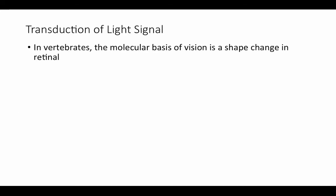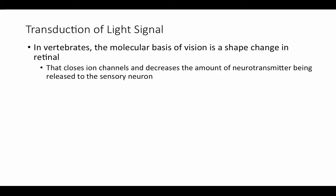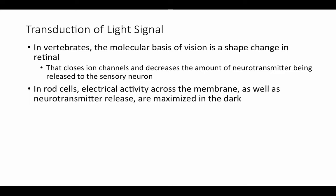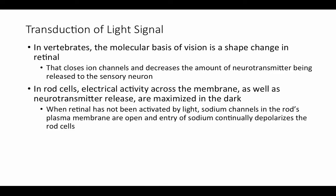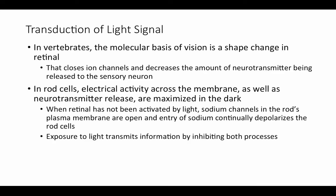In vertebrates, the molecular basis of vision is this shape change in retinol. This change in shape closes ion channels and decreases the amount of neurotransmitter being released to the sensory neuron — which is a little backwards compared to other sensory systems we've discussed. In rod cells, electrical activity across the membrane as well as neurotransmitter release are maximized in the dark. The default state is to have sodium channels open and a flow of sodium that continuously depolarizes the receptor cells, as long as light is not present.